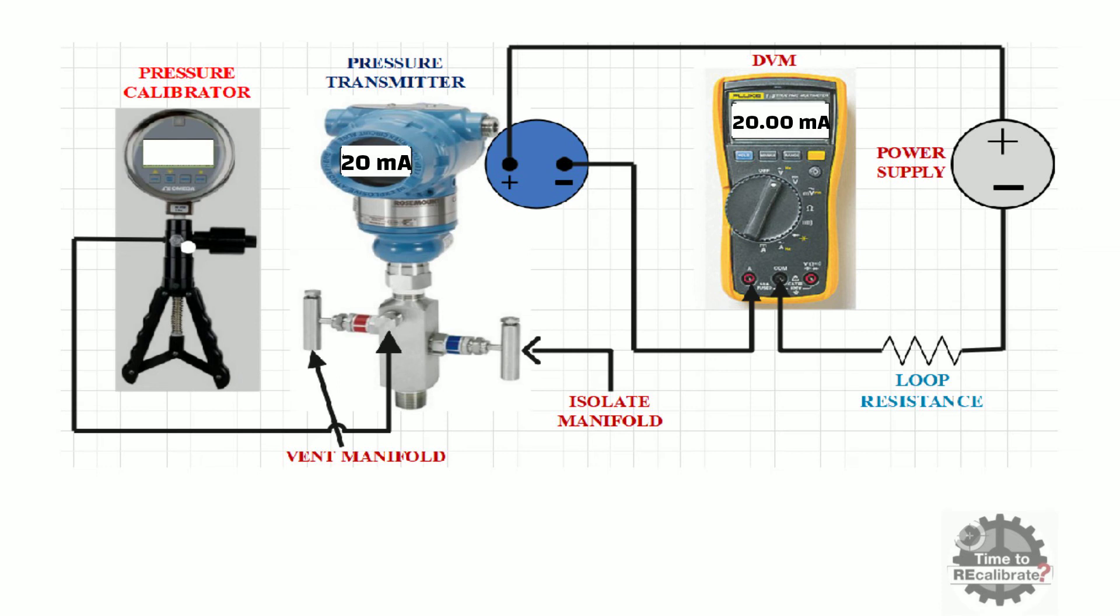So, this is the method to carry out analog loop test in Rosemount 3051 pressure transmitter.